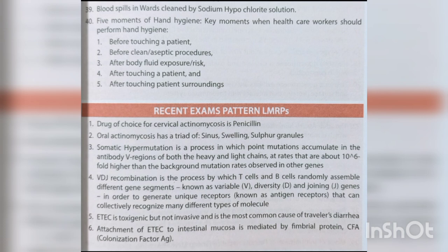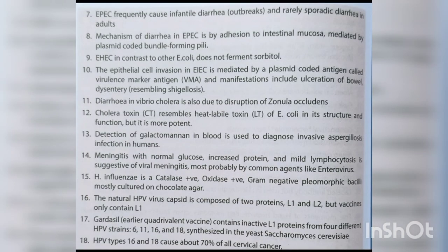ETEC is toxigenic but not invasive and is the most common cause of traveller's diarrhea. Attachment of ETEC to intestinal mucosa is mediated by fimbrial protein CFA (colonization factor antigen). EPEC frequently causes infantile diarrhea outbreaks and rarely sporadic diarrhea in adults; the mechanism of diarrhea is mediated by plasmid-coded bundle-forming pili.